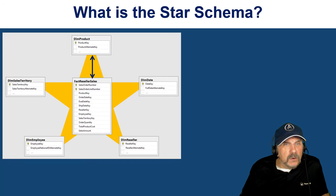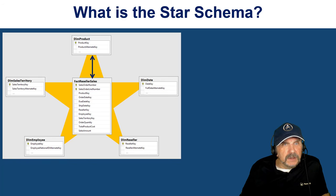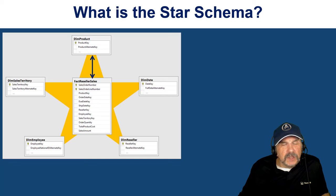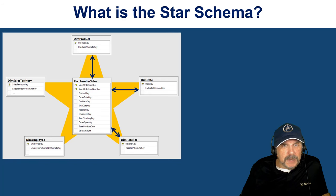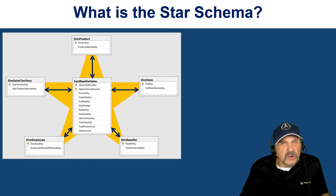When we want to get from our fact reseller sales to, say, the product dimension, we have a foreign key — the product key — which is on that table, and that allows us to join to the product key on the dimension table. The dim product table actually has lots of different dimension attributes, like product name, product category, and so on. When you think of the entire table, you call that a dimension, but the individual values you call dimension attributes. We can also join to dim date, reseller, employee, and sales territory — and of course, there could be any number of dimensions that you might need.